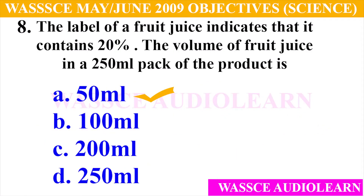Question 8: The label of a fruit juice indicates that it contains 20%. The volume of fruit juice in a 250 ml pack of the product is — A. 50 ml, B. 100 ml, C. 200 ml, D. 250 ml. And the answer for number 8 is A, 50 ml.